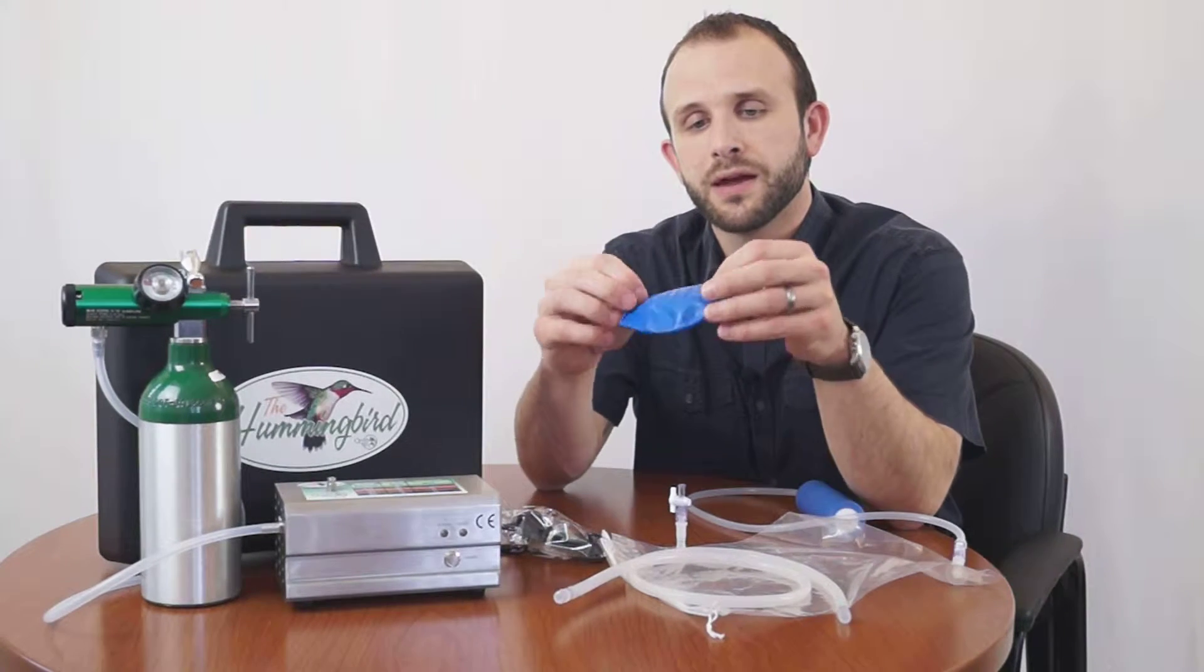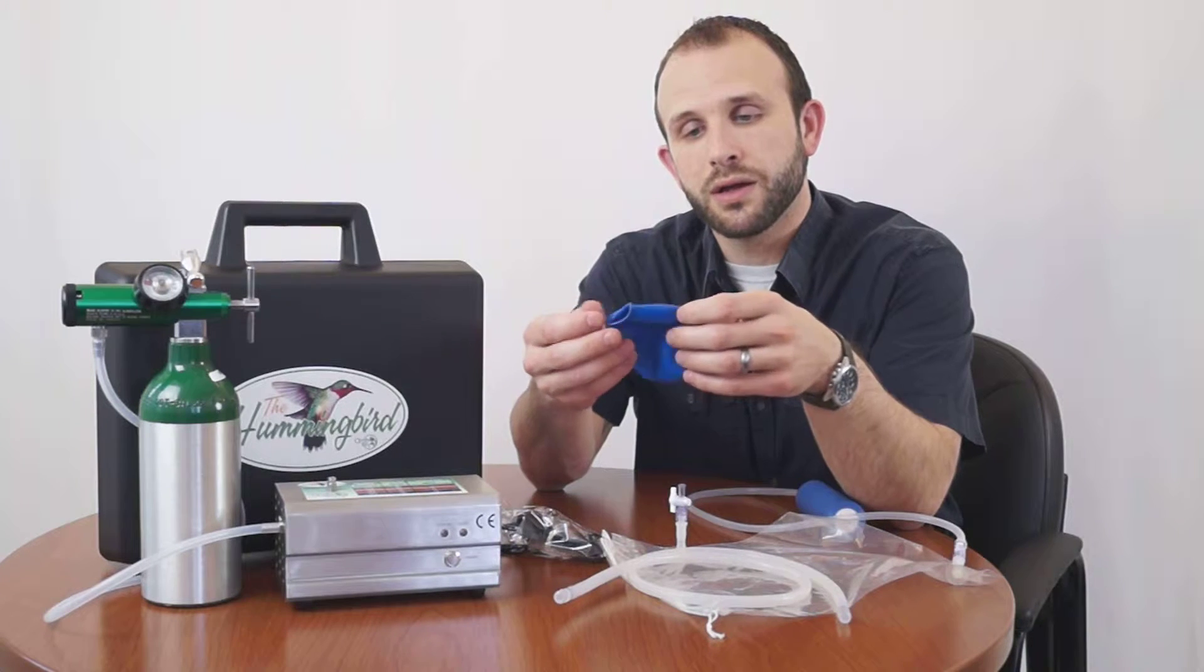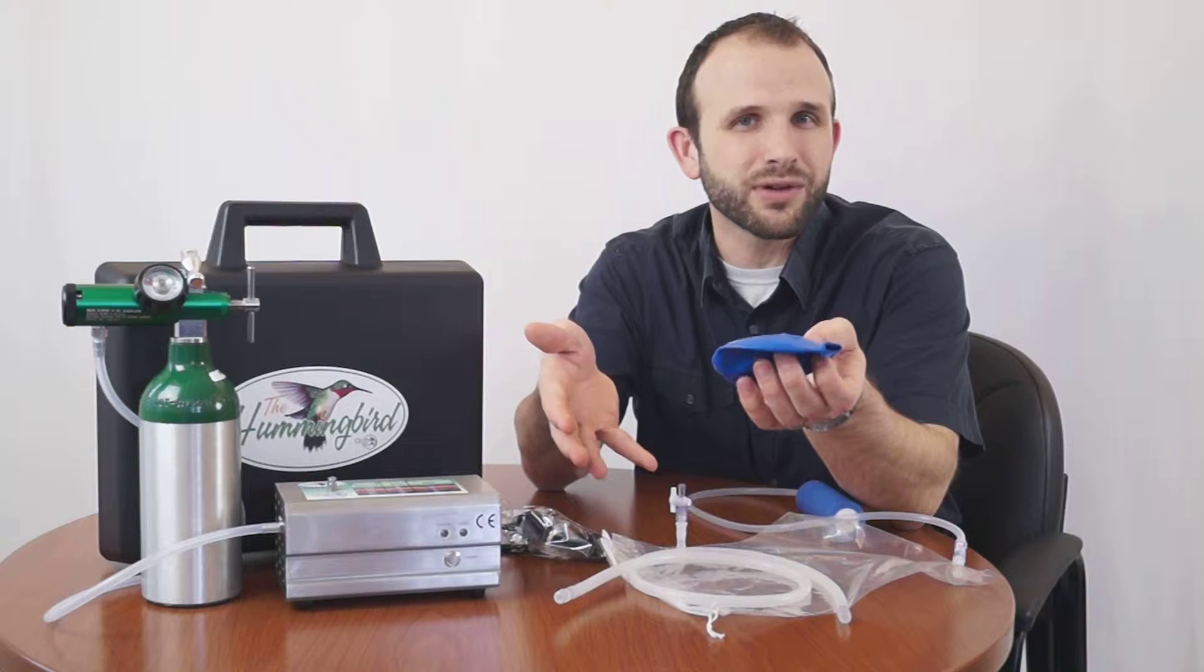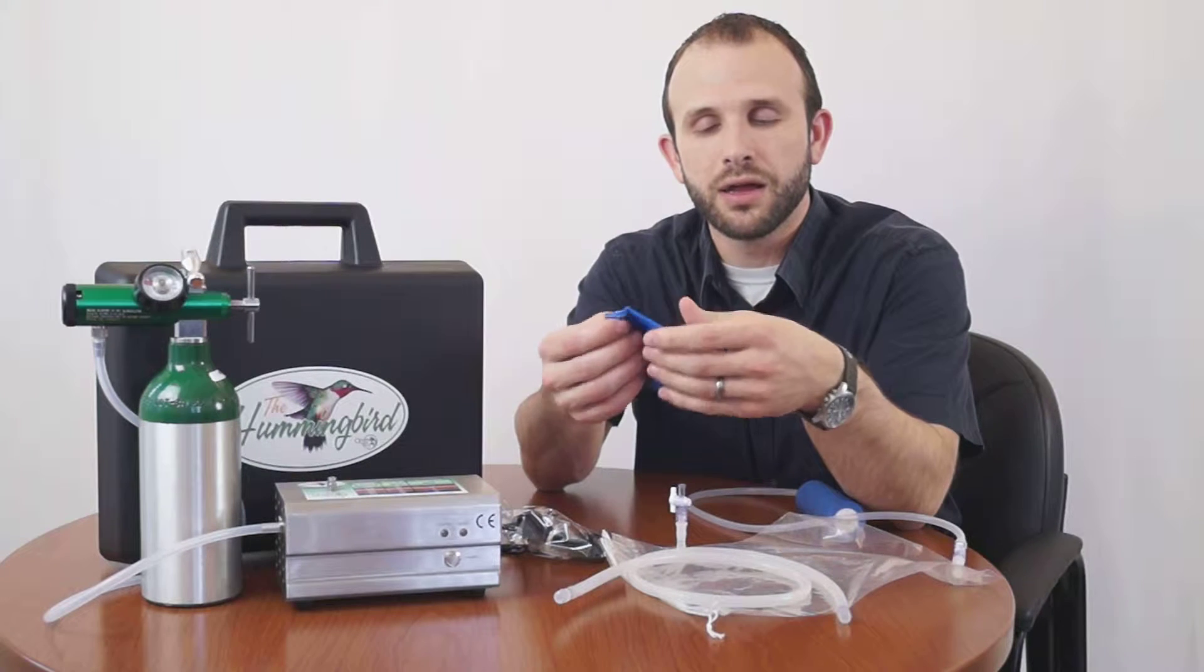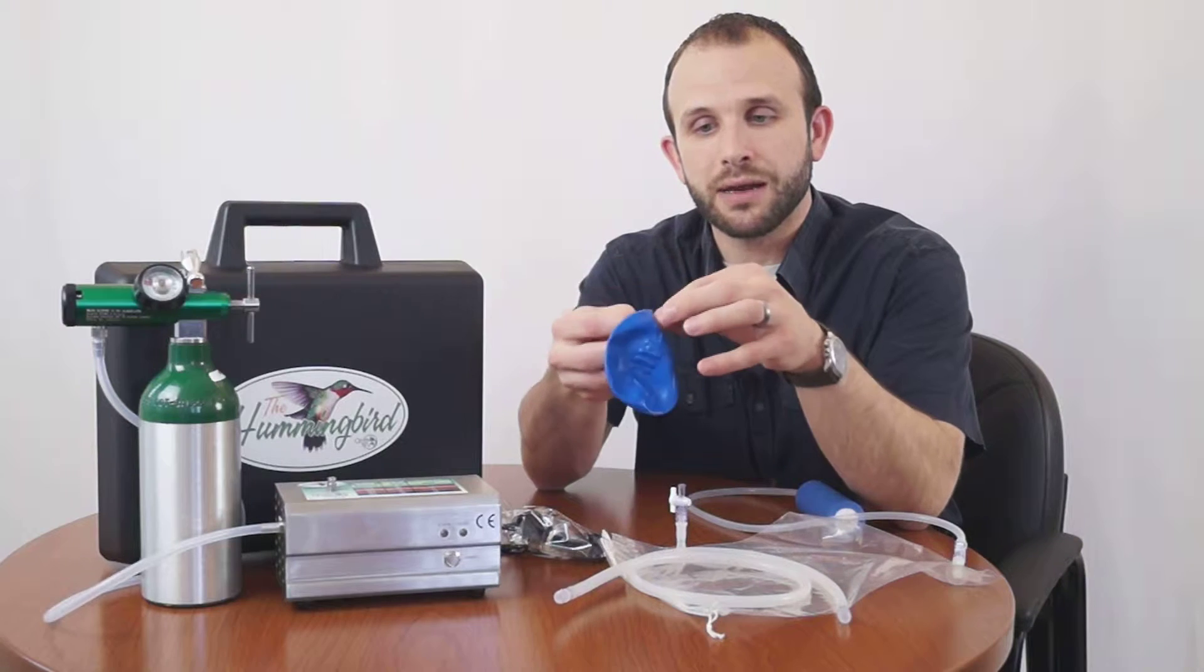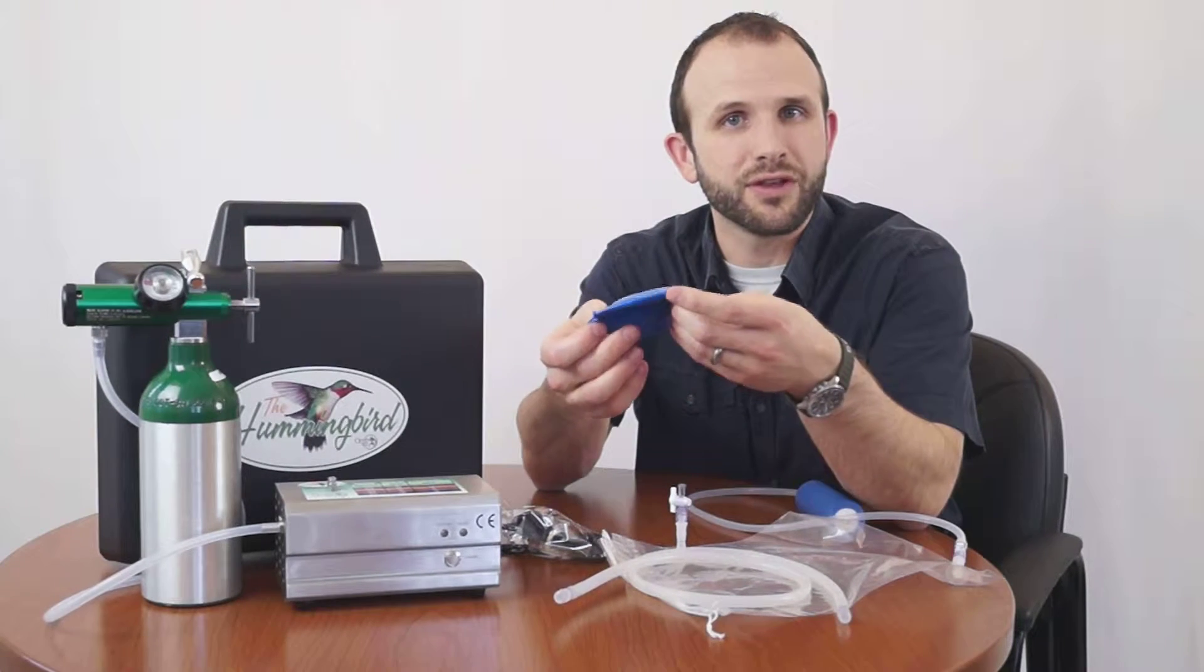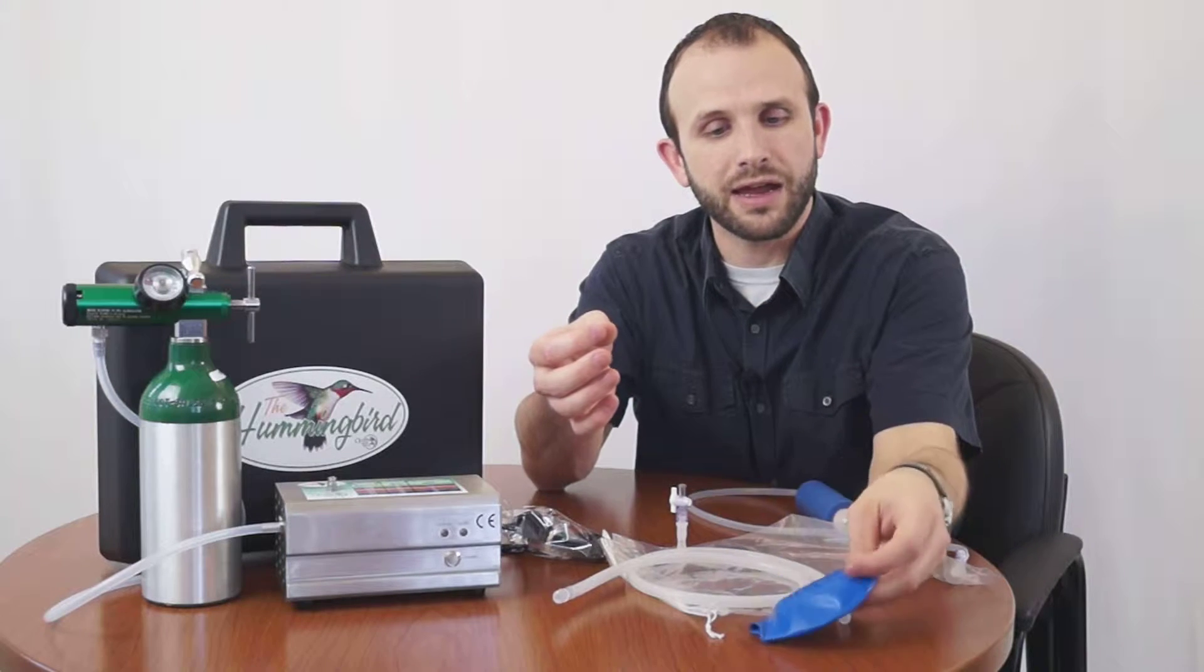This is just a footie, a paw protector, to make sure that our bags don't get punctured with a claw. We recommend that if you're doing a paw, you go ahead and put one of these on first onto the animal. We have different sizes of those that we can send with your kit.